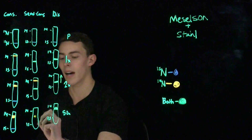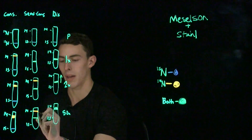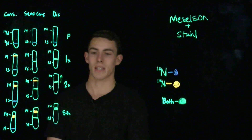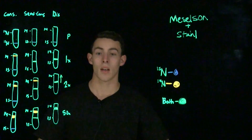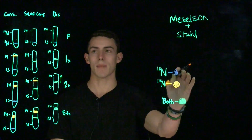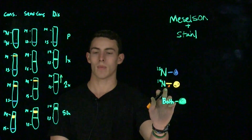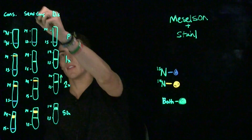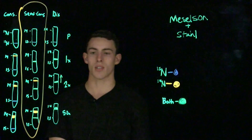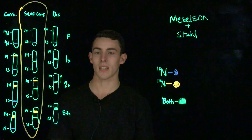Over time, after many replications — say 50 — that 15N-14N hybrid band is not going to change, and we're going to have a large band at 14N, as we also saw in conservative replication. To recap the experiment: cells were raised initially on 15N media, then transferred to 14N media. When they actually conducted the test, the experimental results matched what they predicted for semi-conservative replication. Thus, in living cells, the only type of replication we see is semi-conservative replication.